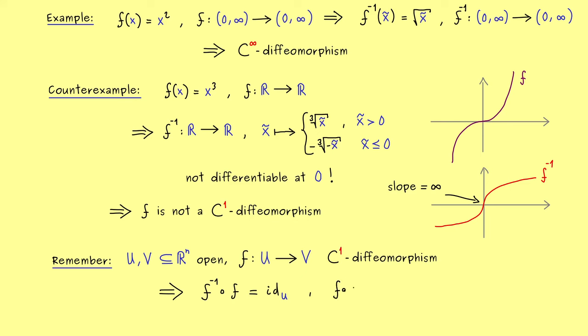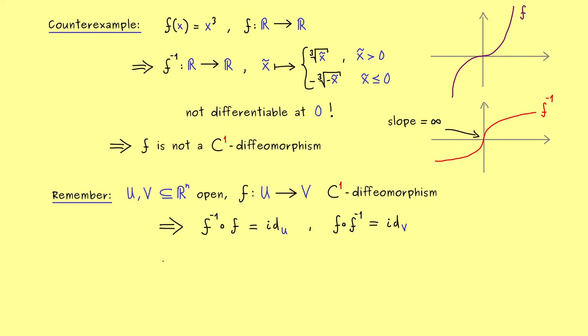This means we have our inverse and we can compose it with f to get out the identity map. More concretely, this would be the identity map on the set U. And the other order here, f composed with f inverse, would give us the identity on V. Ok, and now for both equations, we can form the differentials, which means we look at the Jacobians. And of course, the Jacobian of the identity map is given by the identity matrix. So on the left hand side, we have the Jacobian of this composition at the point x, and on the right hand side we simply have the identity matrix.